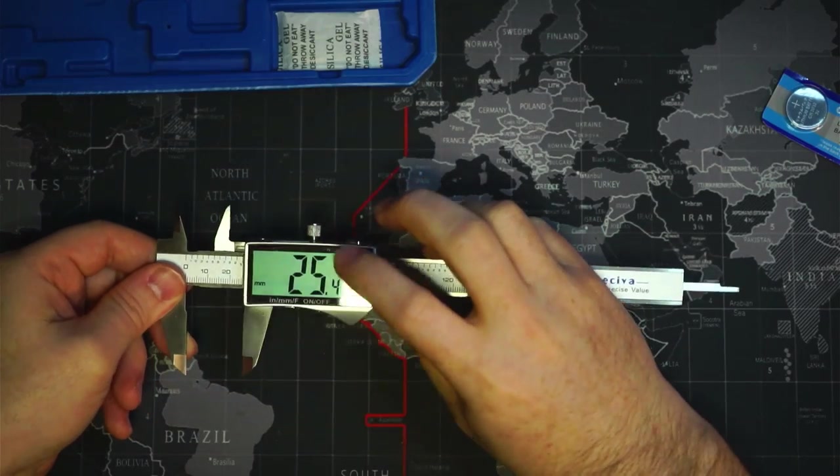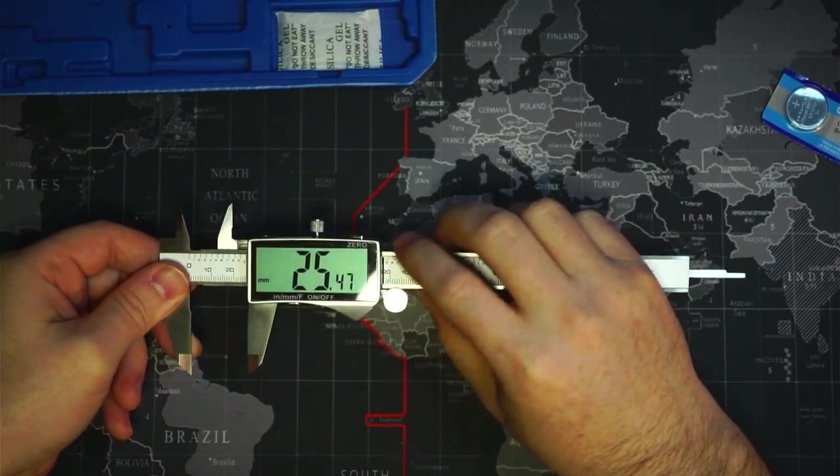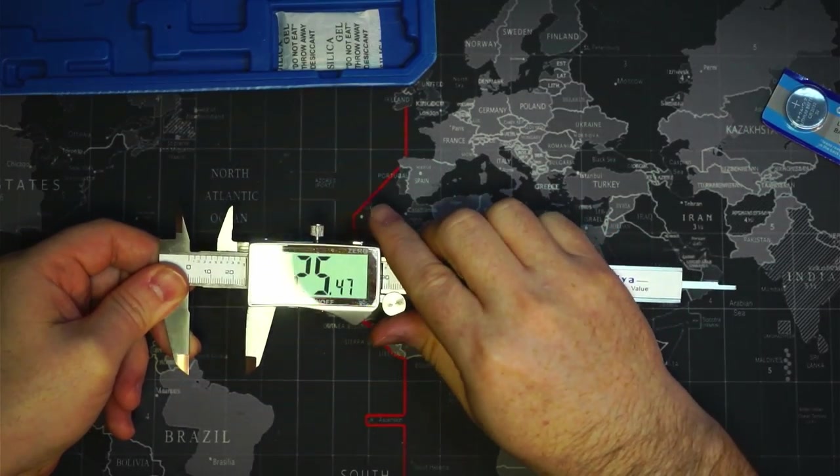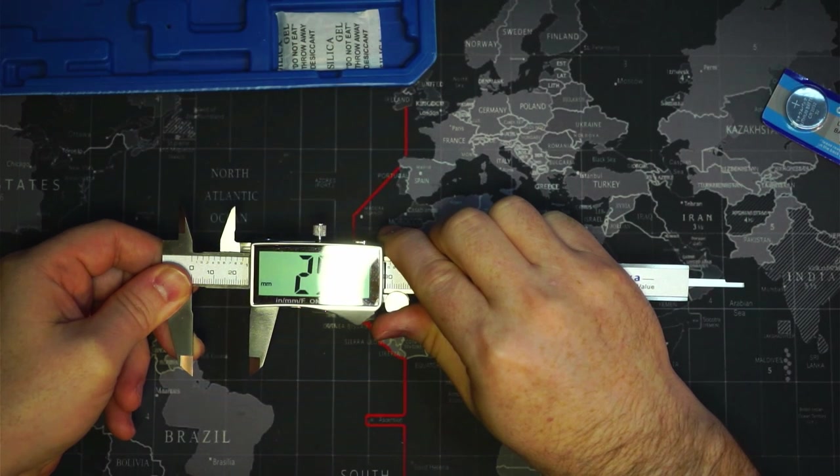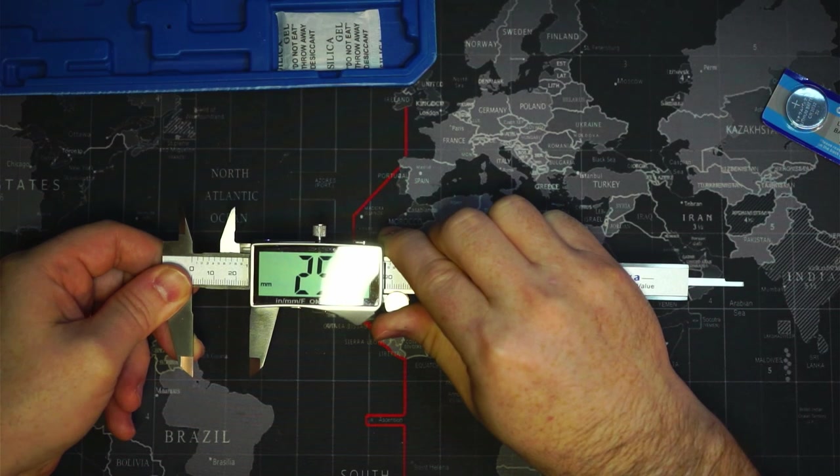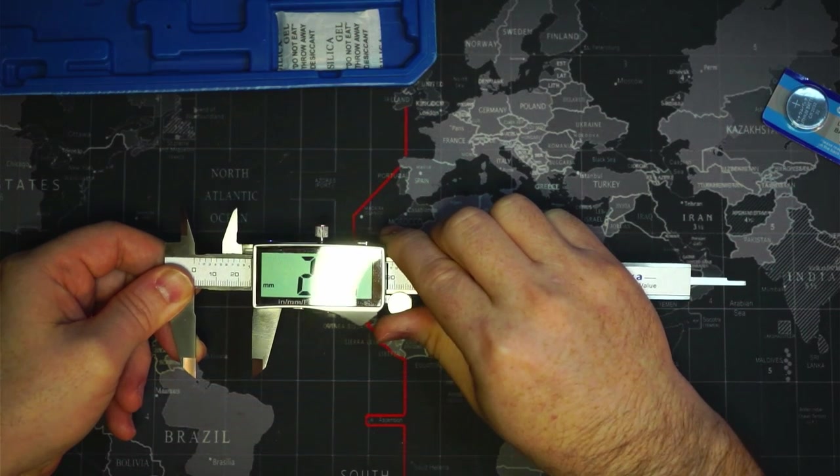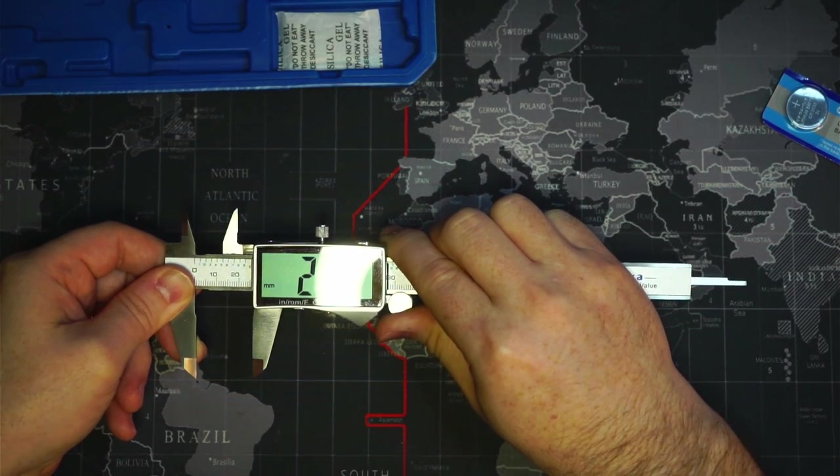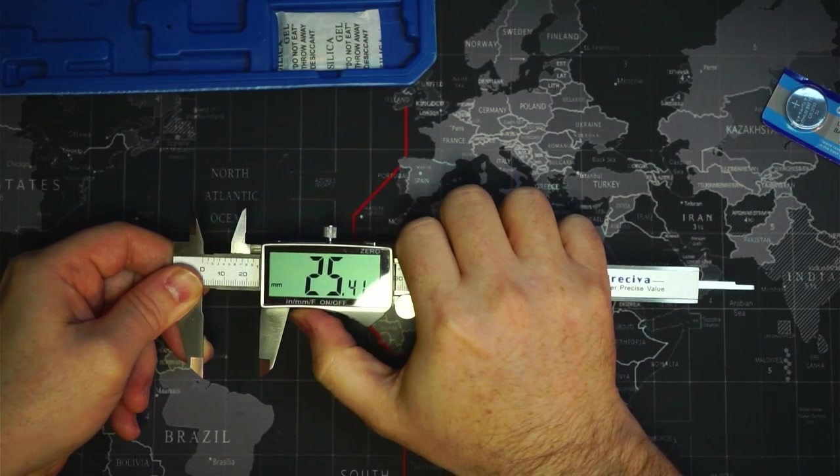So let's take a look. And there we have 25.47 millimeters, which is right on the nose for how large an inch is. Let's get it right down to right there. And we'll see what this says.